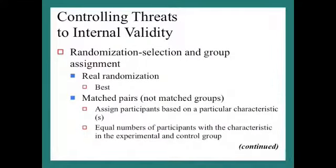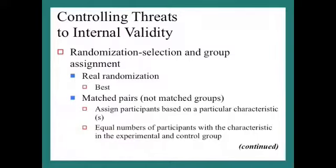We need to control threats to internal and external validity. The most important is controlling internal validity, because if we control those issues, most of the time it will control our external validity issues as well. We identify weaknesses in the limitations section of chapter one. The main way to control internal validity is randomization — random selection of subjects and random assignment to groups.